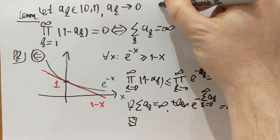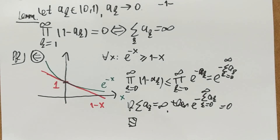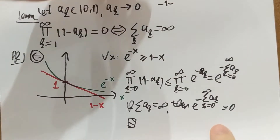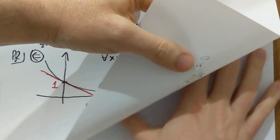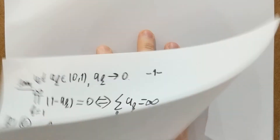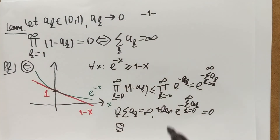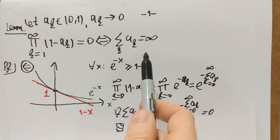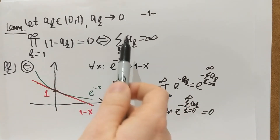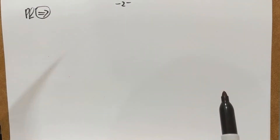Now let's do the second direction of this lemma on page 2. We want to prove that if the product is 0, then the sum is infinite. The lemma says the product is 0 if and only if the sum is infinite, and we want to prove this direction: if the product is 0, then the sum is infinite.